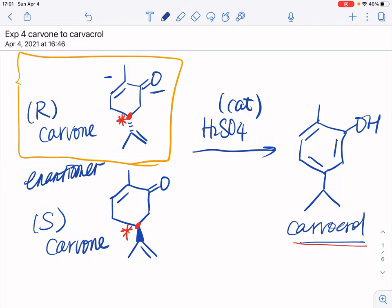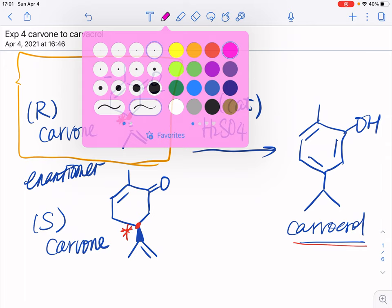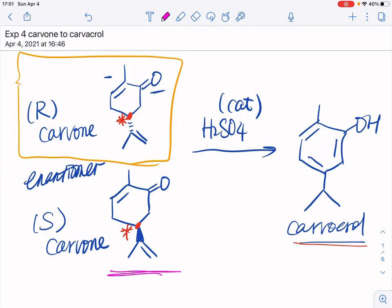Then we had a question in the quiz asking, what if you started this experiment with S-carvone, the enantiomer of the R structure? Well, the answer is yes, you will still be producing the same carvacrol product.